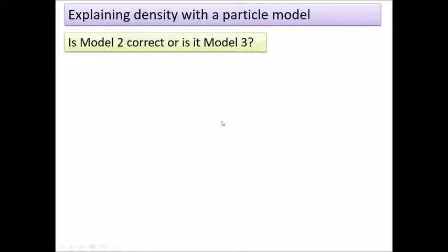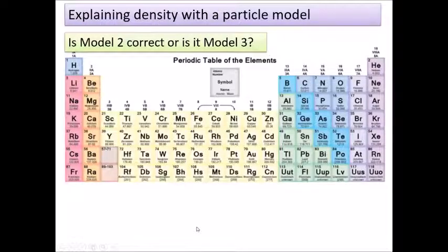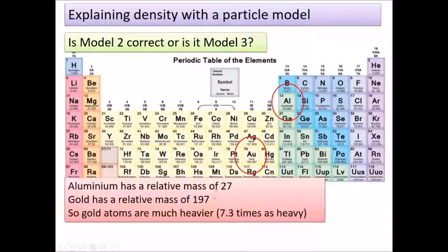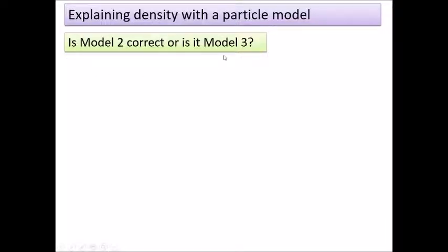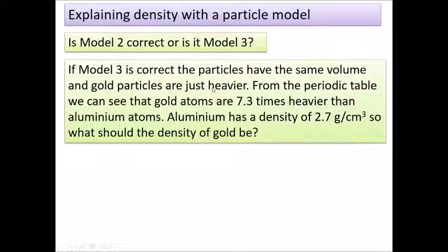We need to think about which model is correct. Looking at the periodic table, aluminium is element 13 and gold is element 79. The relative atomic mass of gold is 197, while aluminium is only 27 — so gold atoms are actually 7.3 times heavier than aluminium atoms. This tells us model three is correct: gold atoms are much heavier, and their sizes are quite similar.